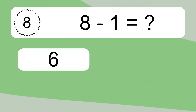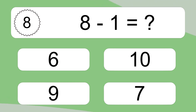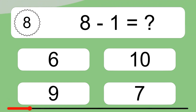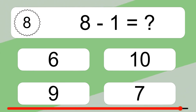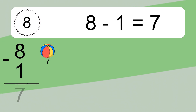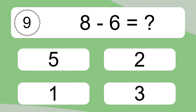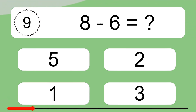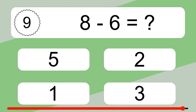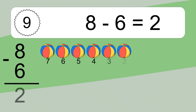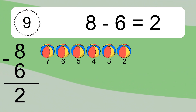8 minus 1 equals what? 8 minus 1 equals 7. Let's count it: 7. 8 minus 6 equals what? 8 minus 6 equals 2. Let's count it: 7, 6, 5, 4, 3, 2.